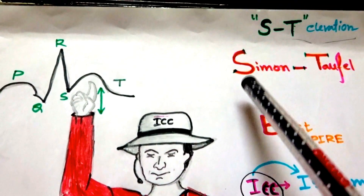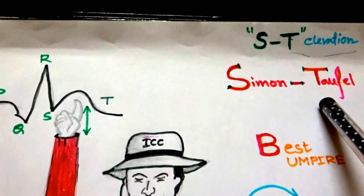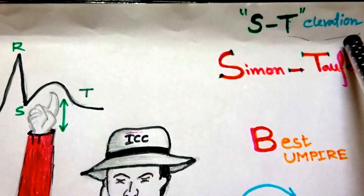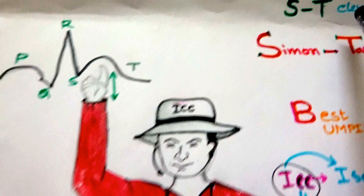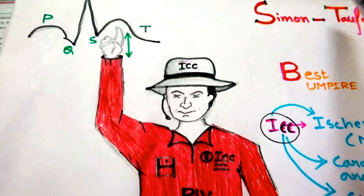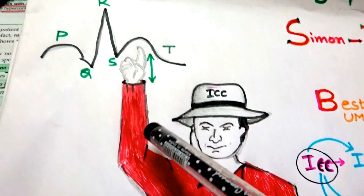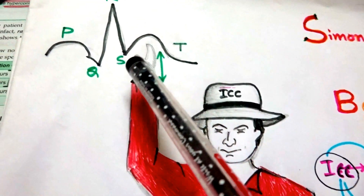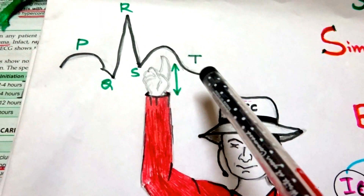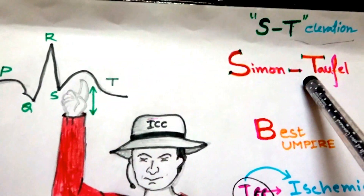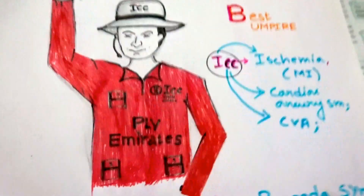Simon Toffel gives us the initials ST, so that we can relate it with the ST segment elevation. We can also see that Simon Toffel is elevating the ST segment. This is the two-way method of remembering this mnemonic.